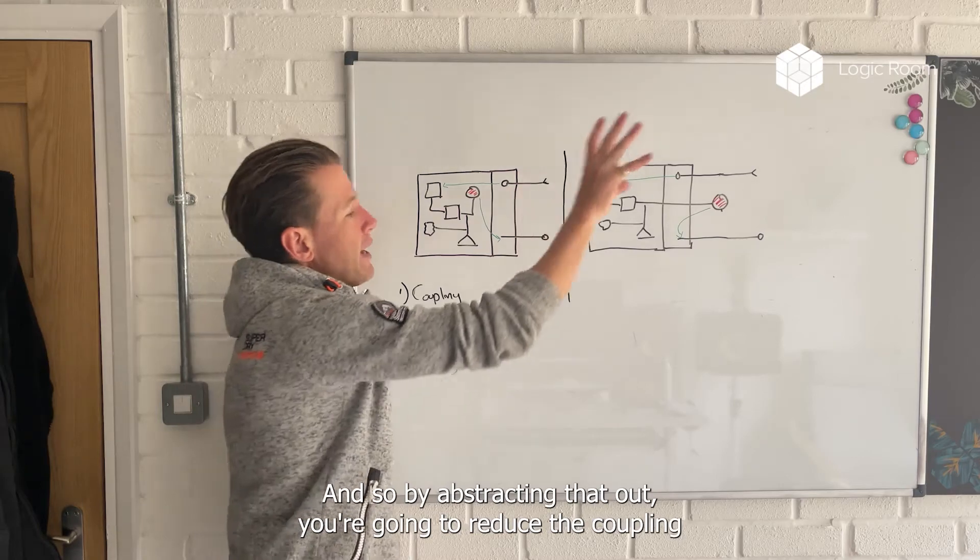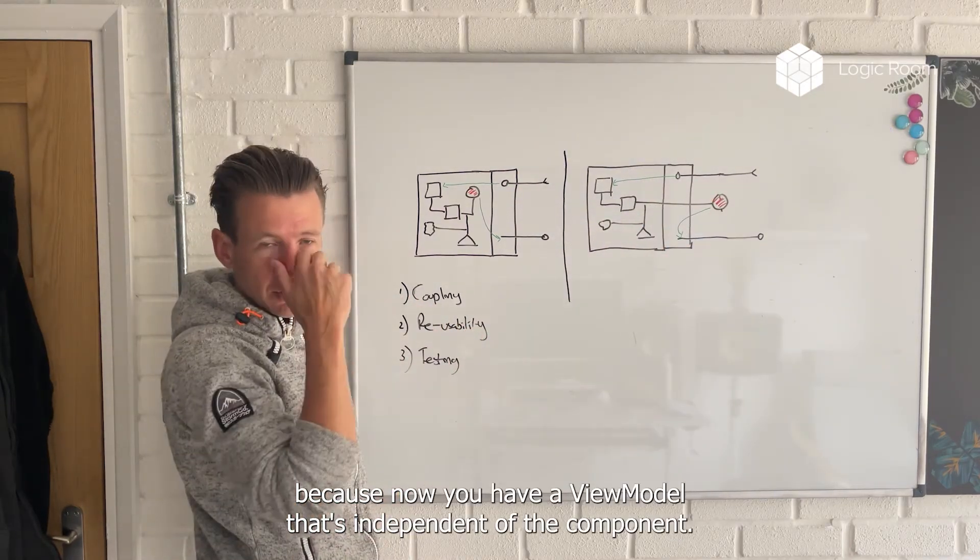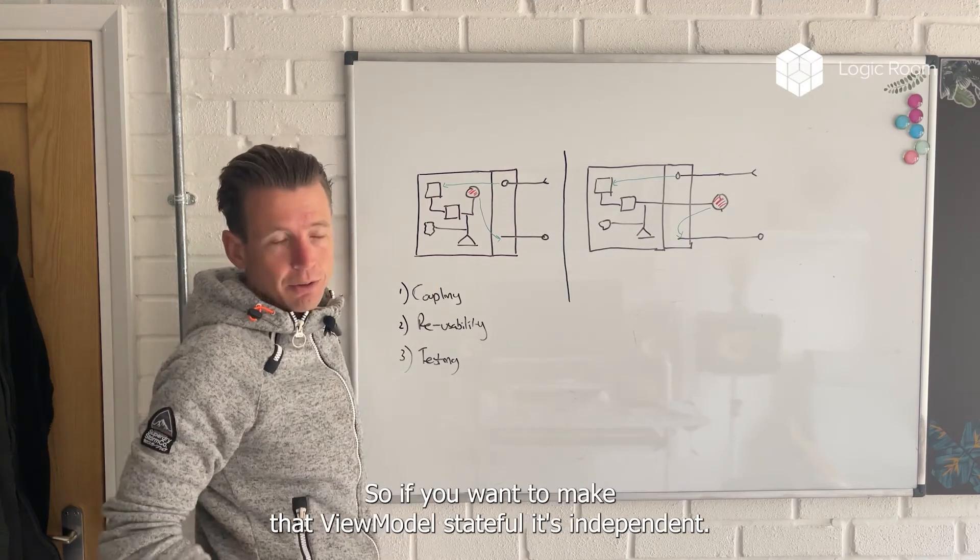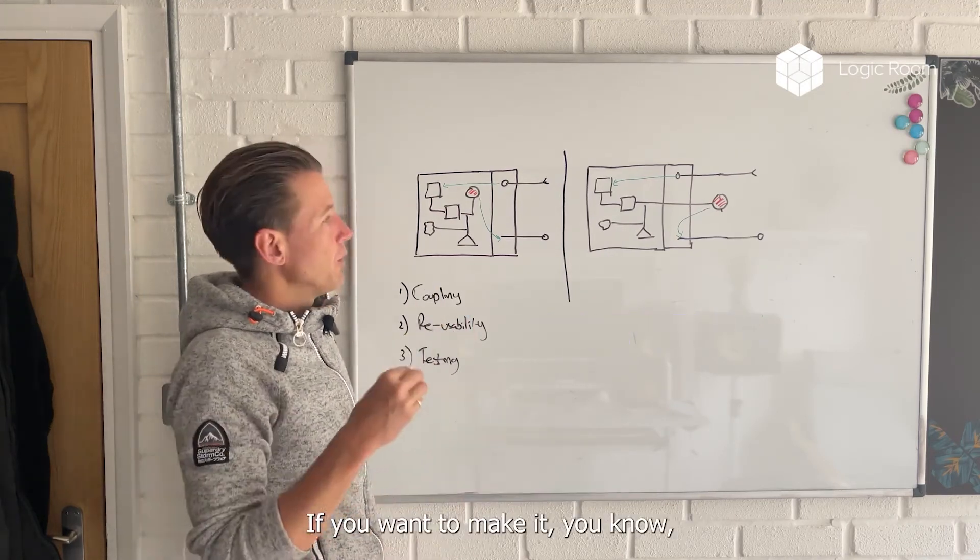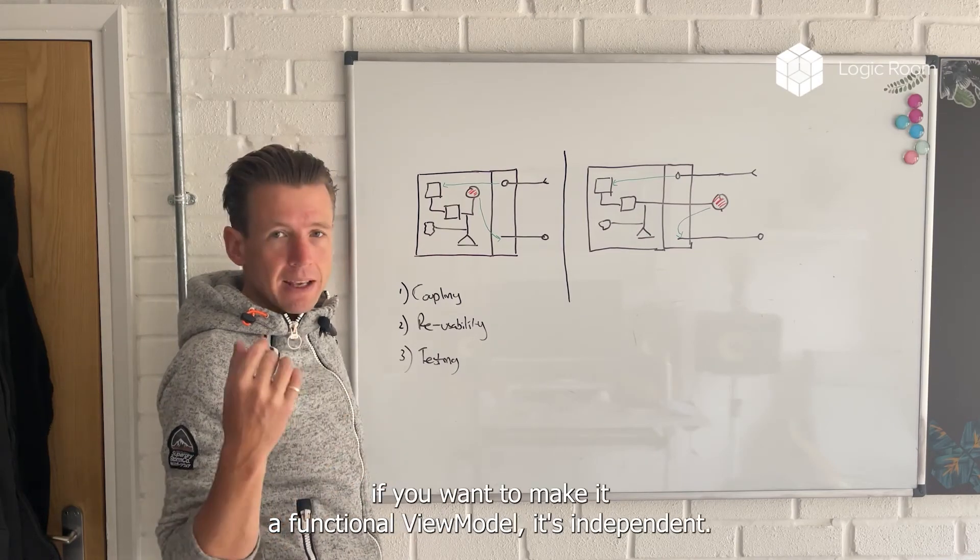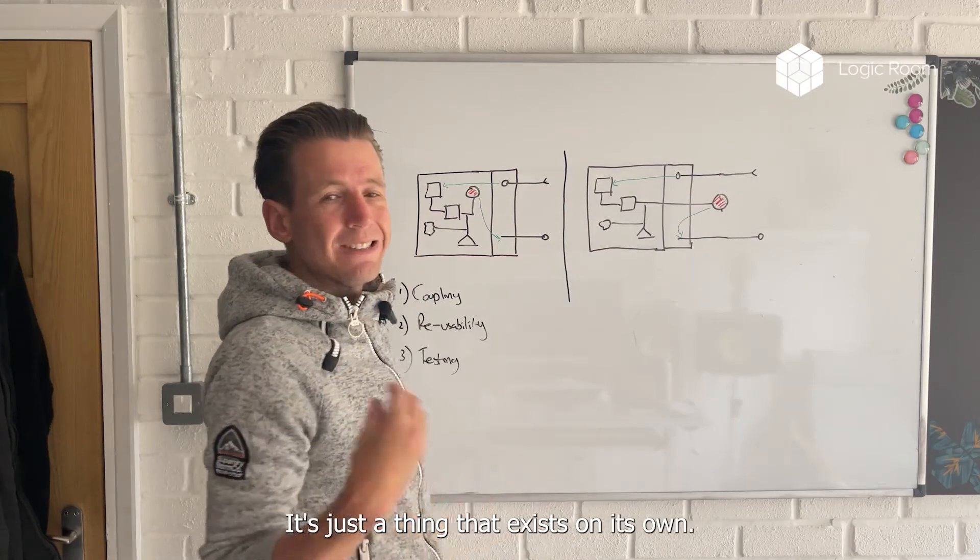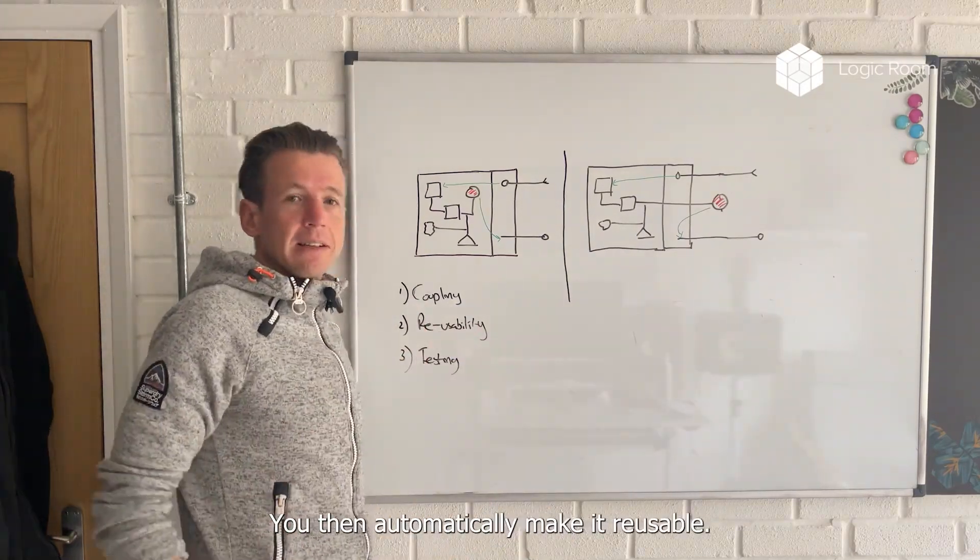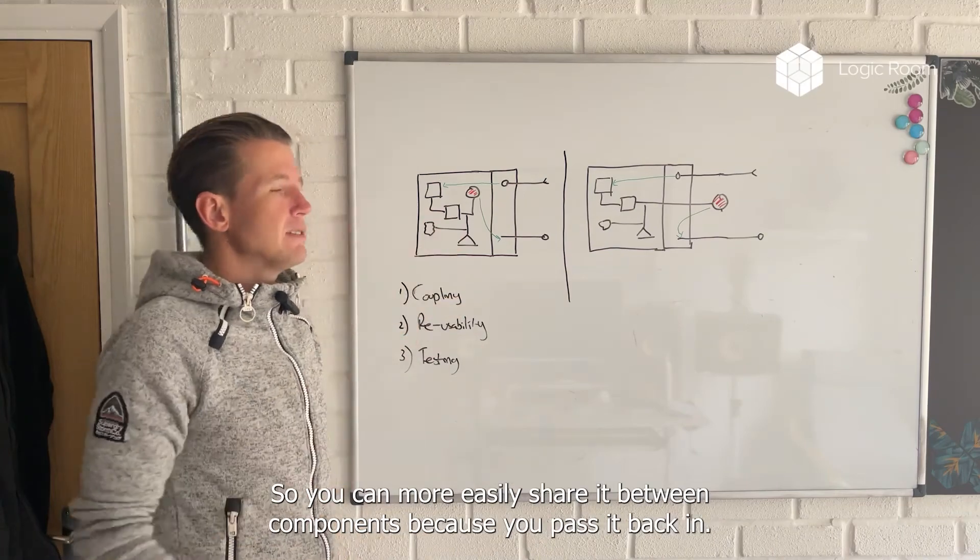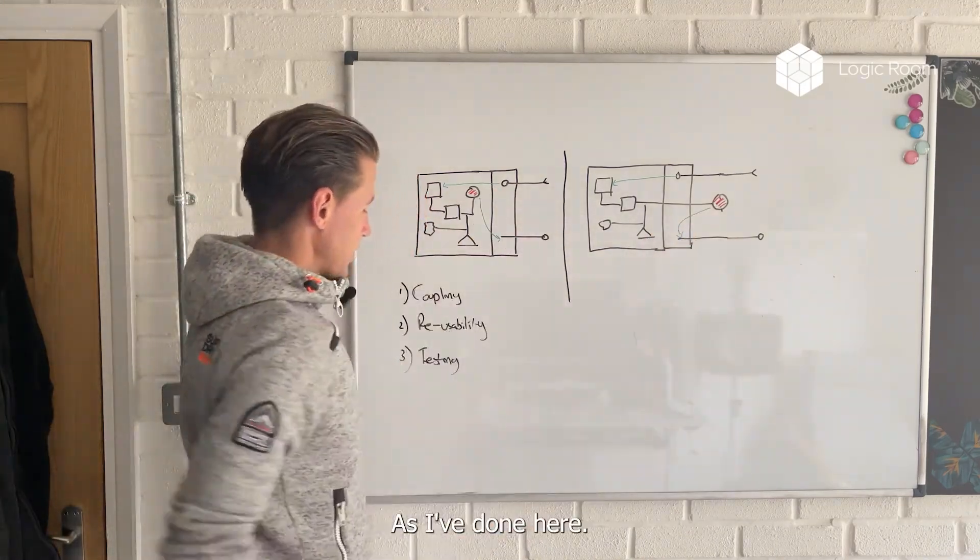And so by abstracting that out, you're going to reduce the coupling because now you have a view model that's independent of the components. So if you want to make that view model stateful, it's independent. If you want to make it a functional view model, it's independent. It's just a data structure. It's just a thing that exists on its own, so you can decouple it. You then automatically make it reusable, so you can more easily share it between components because you can pass it back in, as I've done here.